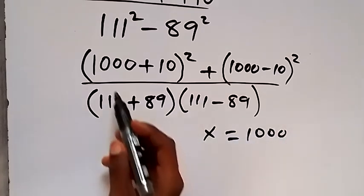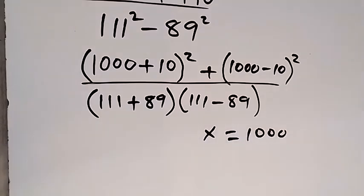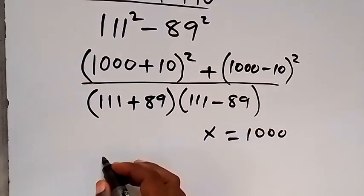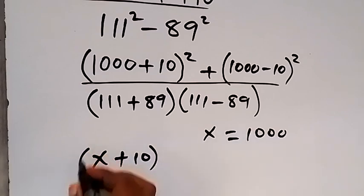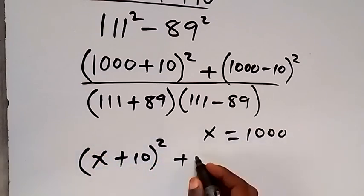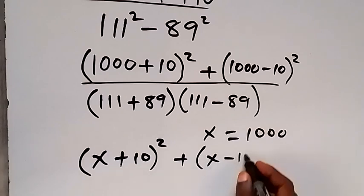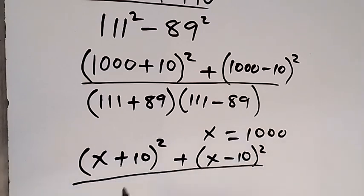From here, and then we replace 1000 as x and this will become x plus 10 all squared, then plus x minus 10 all squared.